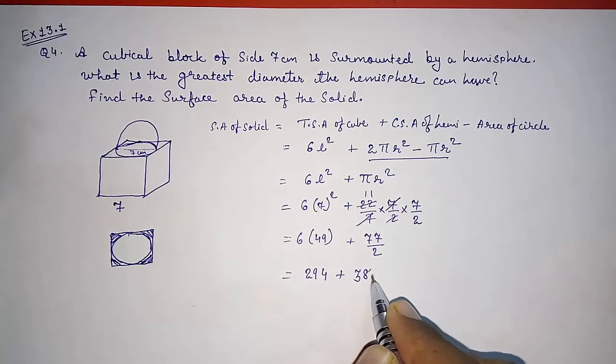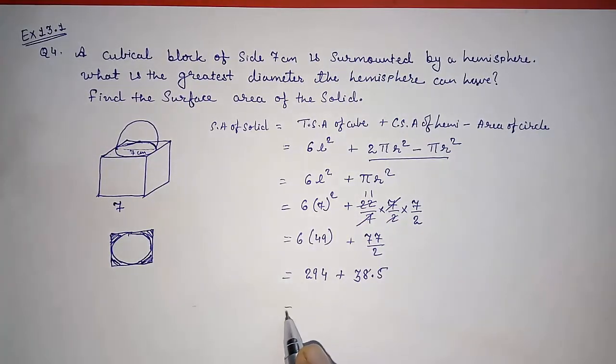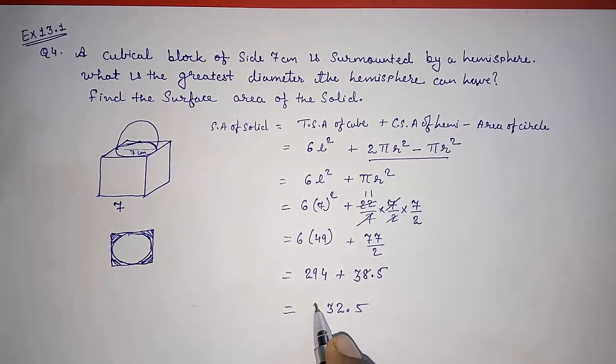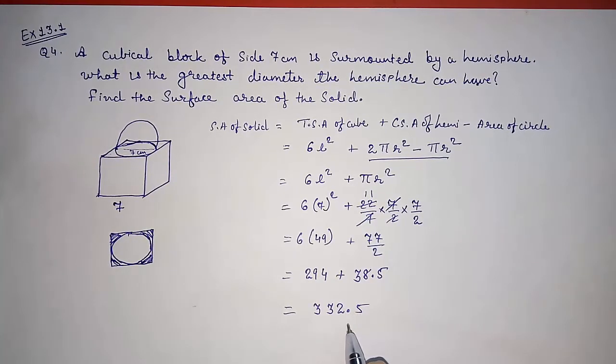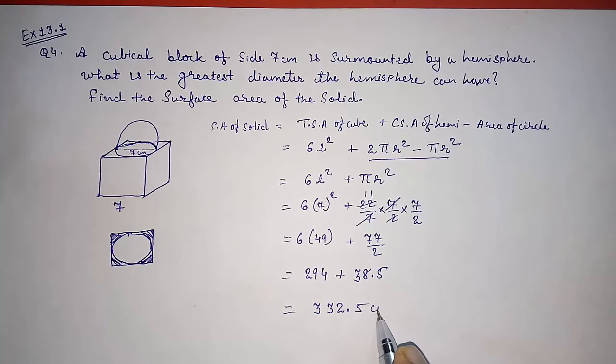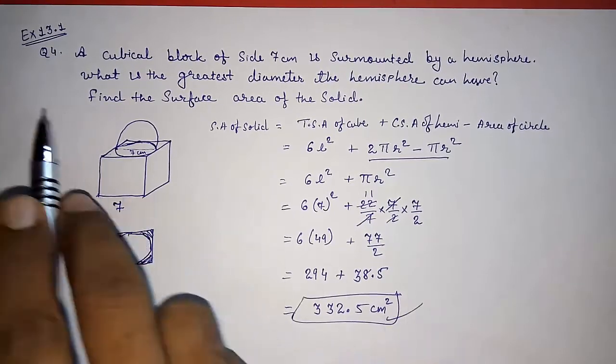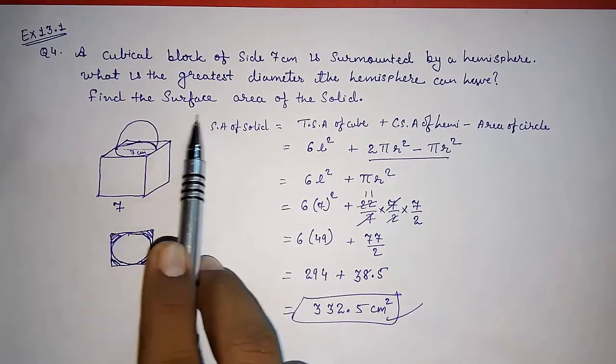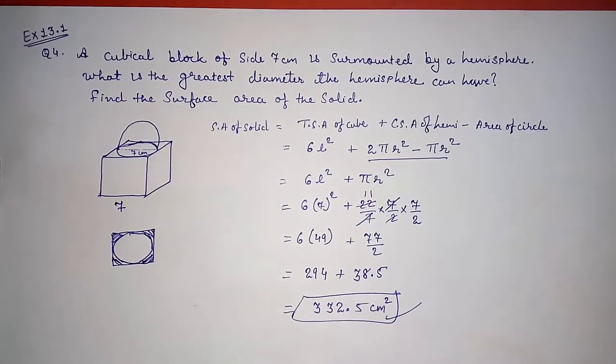Now adding this: 0.5, 8 and 4 is 12, carry 1. 9 plus 1 is 10, 13, carry 1. 332.5 cm². So this way we can find out the surface area of this solid.